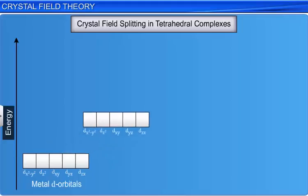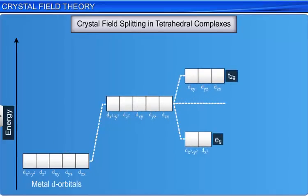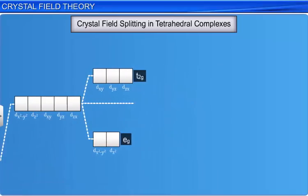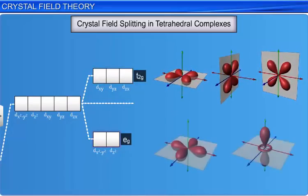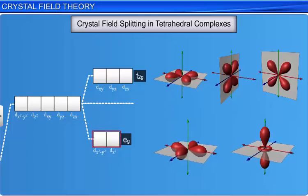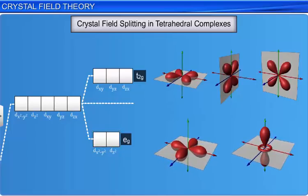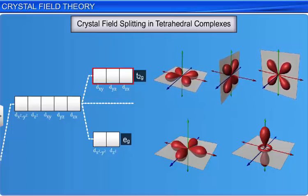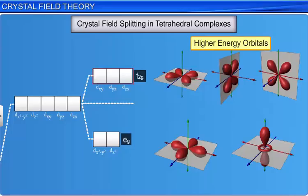Now let's look at the crystal field splitting in tetrahedral complexes. The approach of the ligands in a tetrahedral field is as shown in the figure. You can observe from the figure that the ligands interact more with the t2g orbitals than the eg orbitals lying between the axes. This is because the t2g orbitals are oriented along the direction of the approach of the ligands. Thus, in tetrahedral splitting, the t2g orbitals are of higher energy and the two eg orbitals are of lower energy.